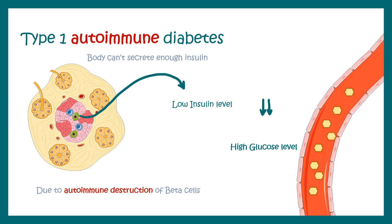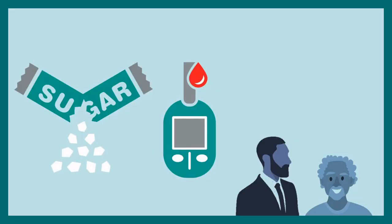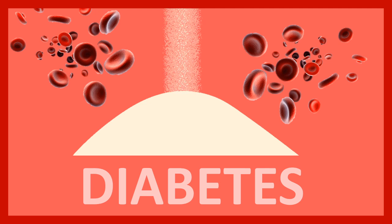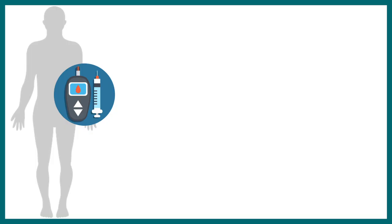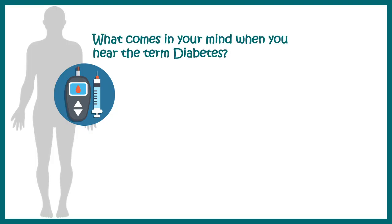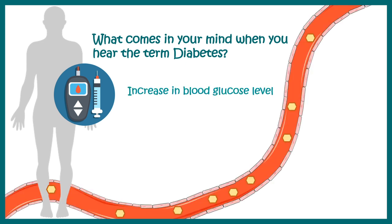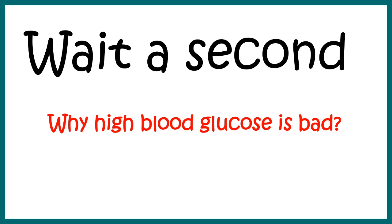Before understanding the nitty-gritty details of autoimmune diabetes and the complicated immune responses, we should take it slowly and start from the very basics. You must be familiar with the term 'sugar,' which you may have heard from your father or grandfather. The medical term for it is diabetes, which simply means elevated blood sugar level.